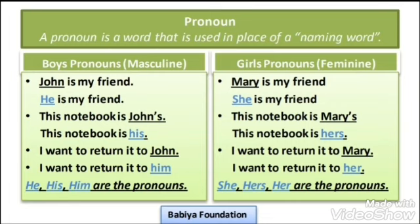Second example: This notebook is Mary's — this notebook is hers. Remember, 'hers' is a Pronoun. Note that the example given in the textbook has a printing mistake, so please refer to this example instead. I want to return it to Mary — I want to return it to her. So she, hers, and her are all Pronouns — girls' pronouns, or feminine pronouns.